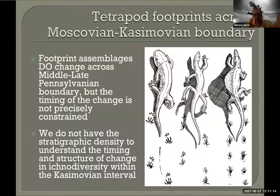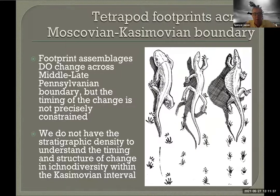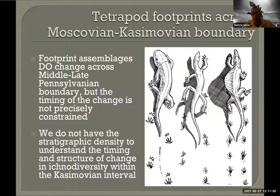Matt's tetrapod footprint record is directly related to the bone record. People who study tetrapod footprints think of track taxa as proxies for biotaxa, not just as behaviors. For example, Batrachichnus, associated with small temnospondyl amphibians, acts as a proxy for Temnospondyli. As Matt showed, there's no question there is a change in the footprint ichnofauna as we go from Westphalian to Stefanian time — though the relationship is not well constrained.